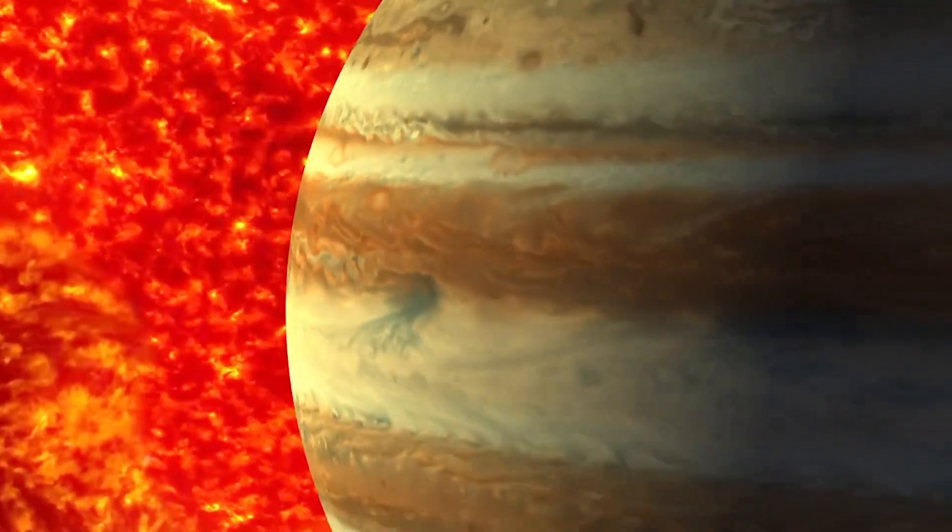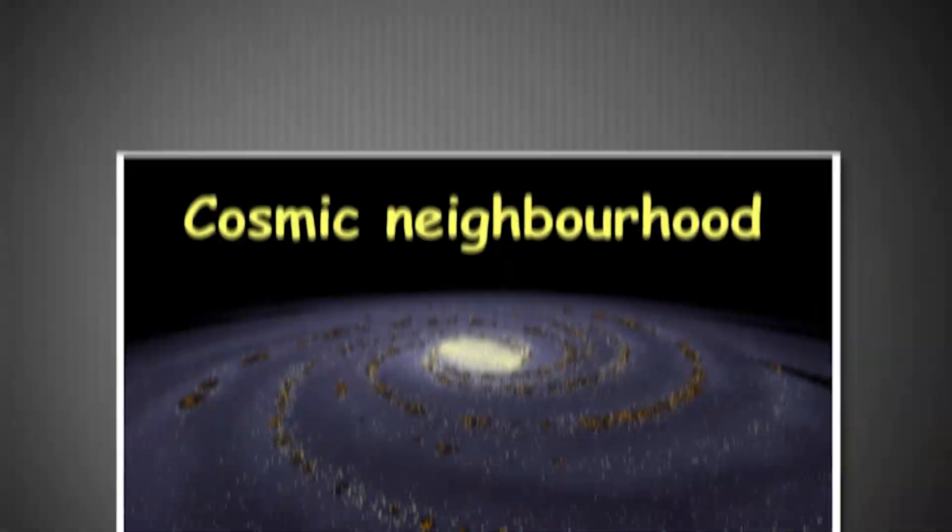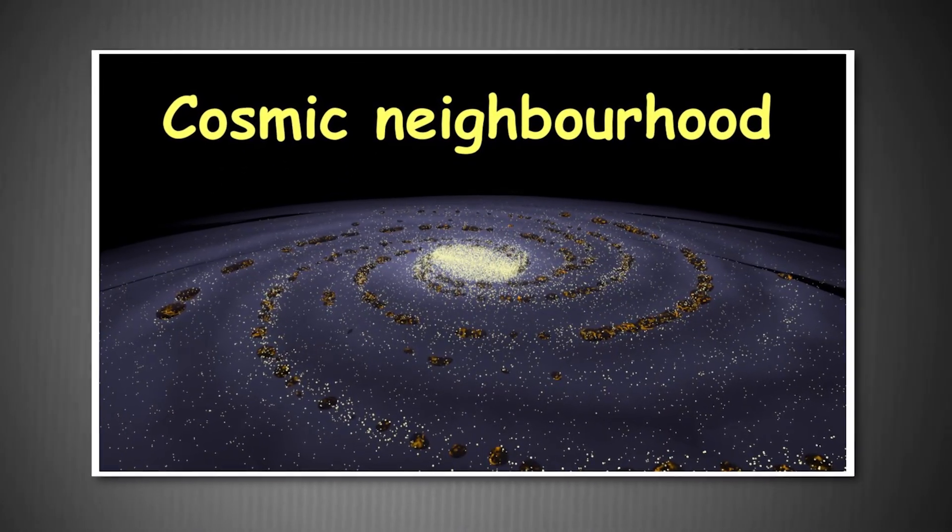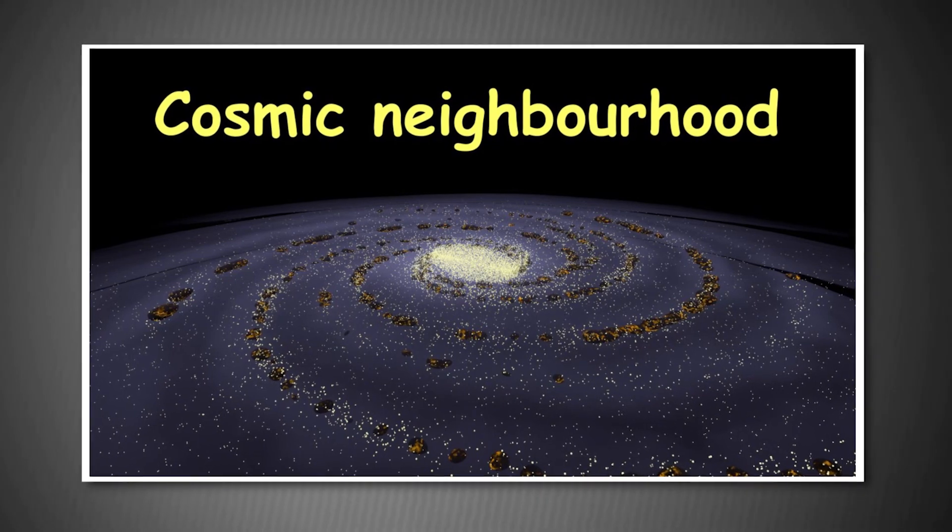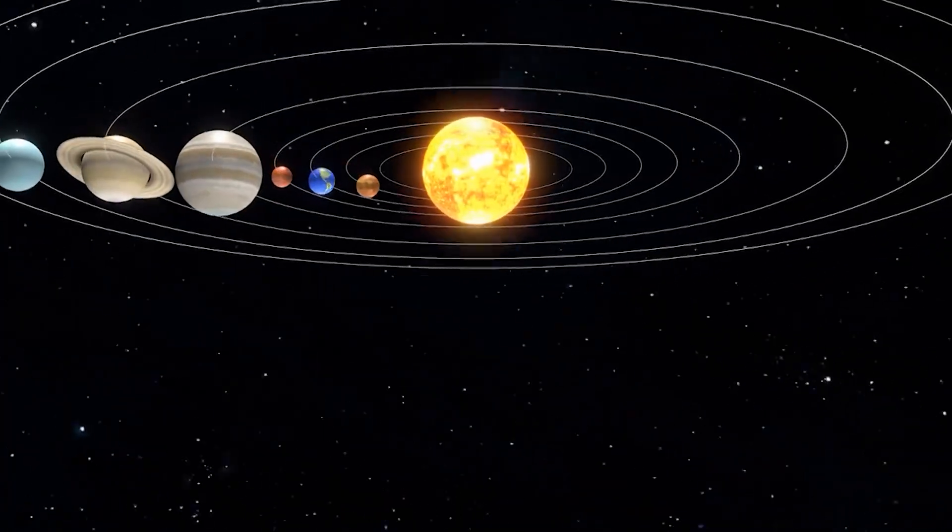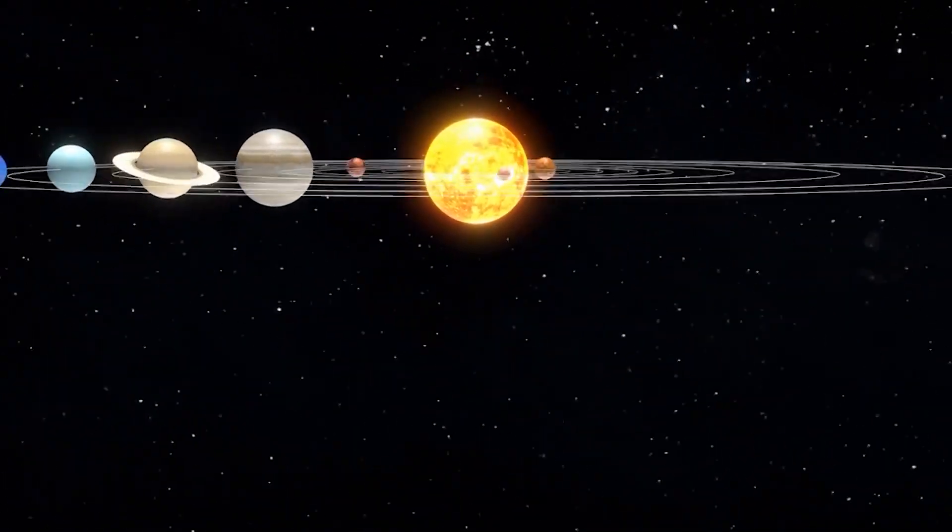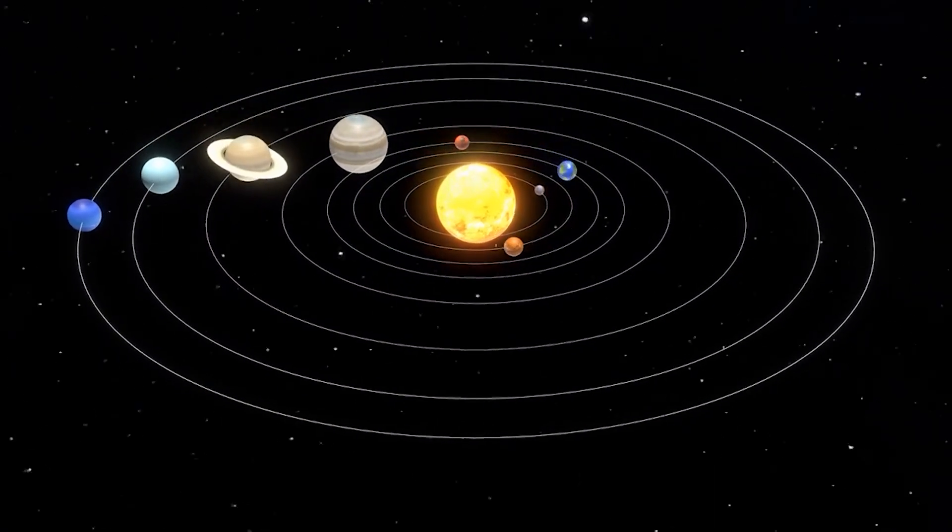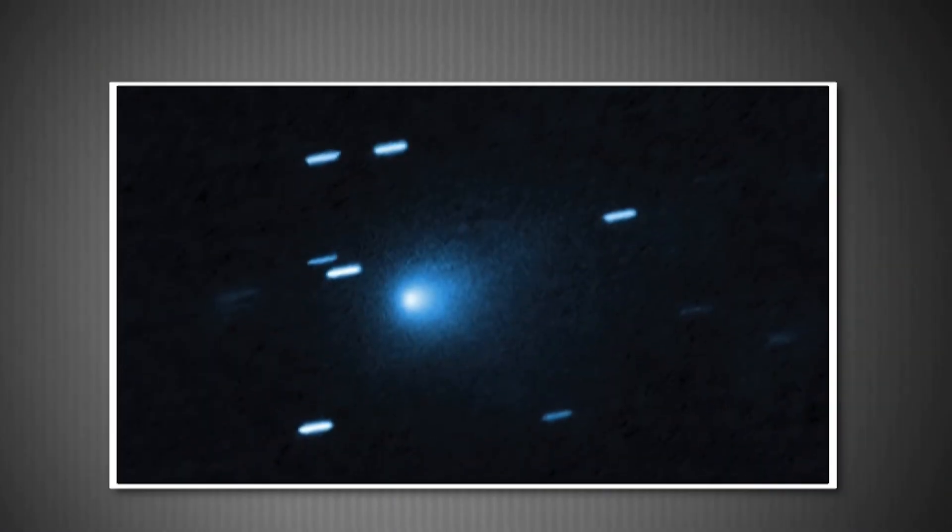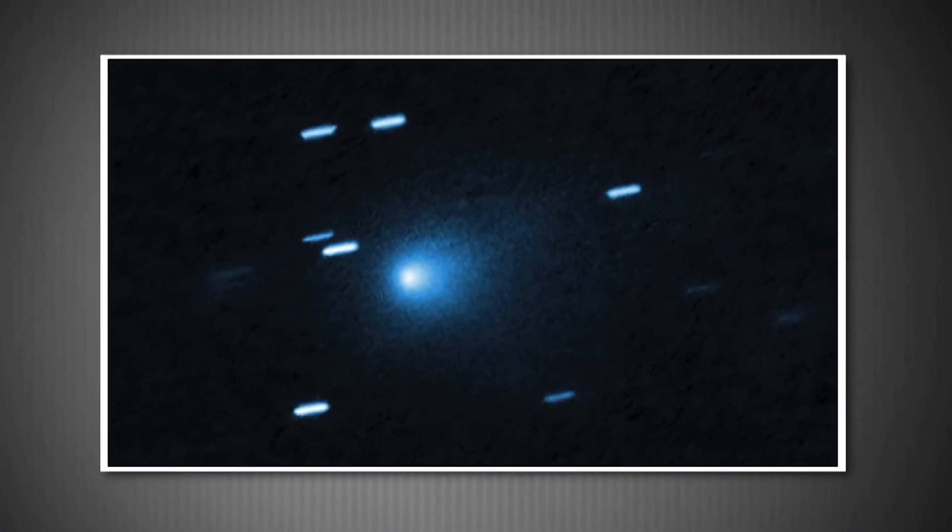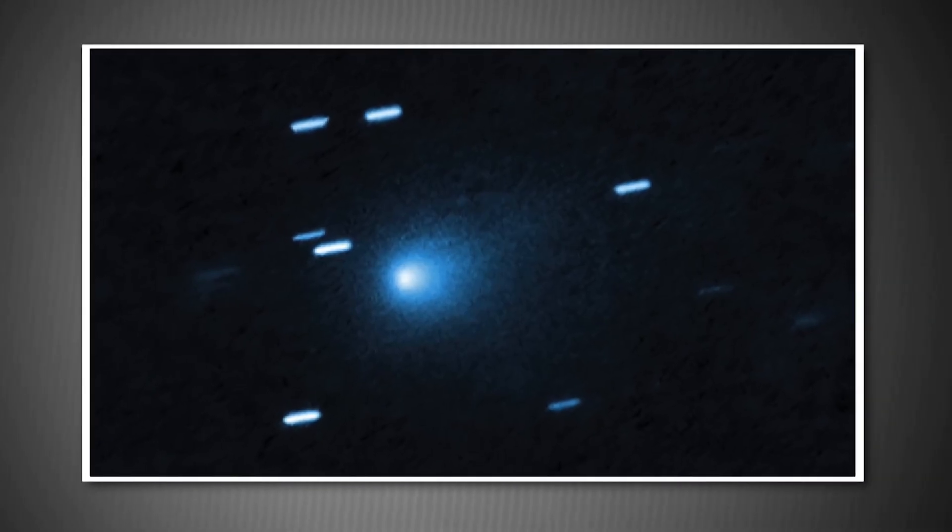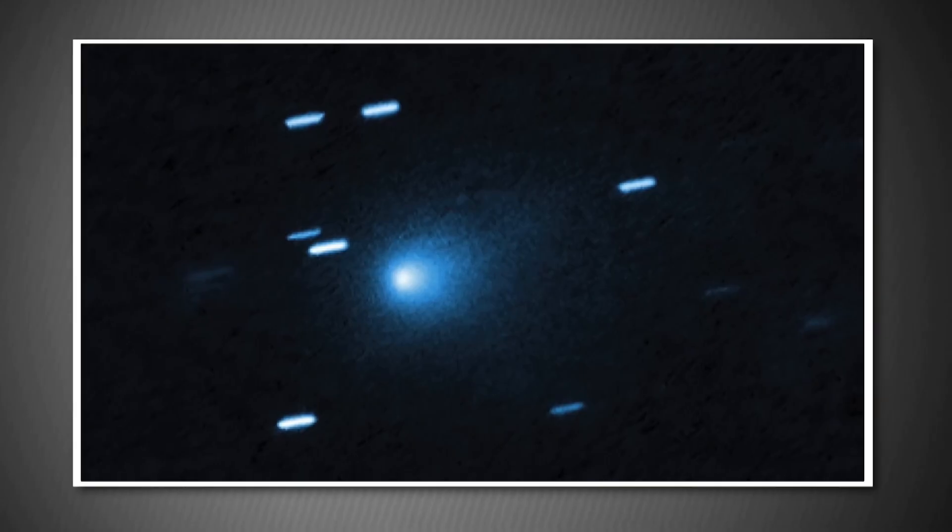That means this comet could predate our entire solar system by more than 3 billion years. It's older than Earth, older than the Sun, possibly older than any object in our cosmic neighborhood. This isn't just a visitor from another star system. It's a time capsule from the ancient universe. Second, this is only the third confirmed interstellar object ever detected passing through our solar system in recorded history.